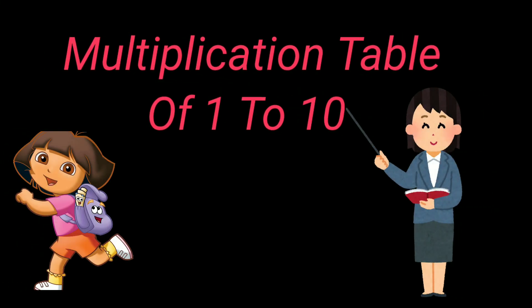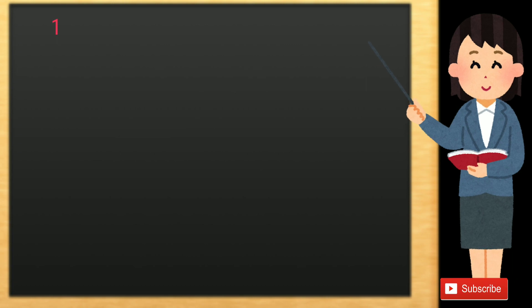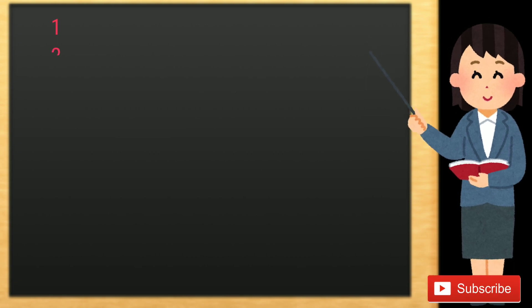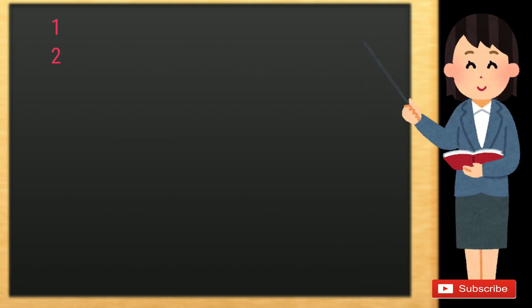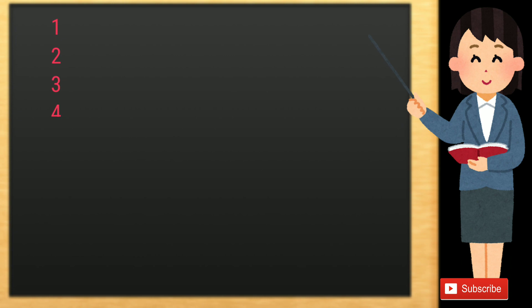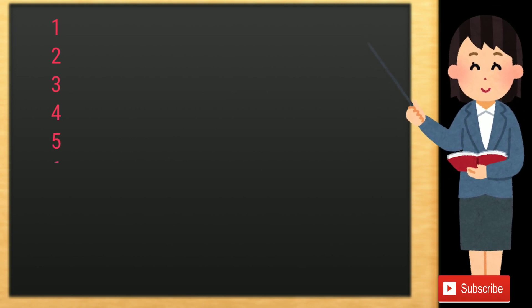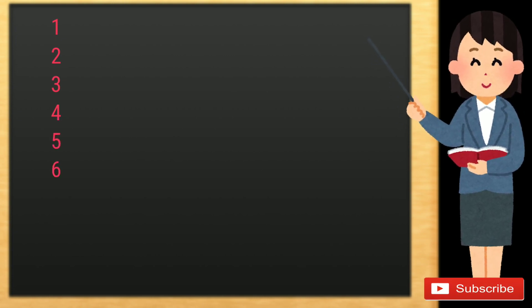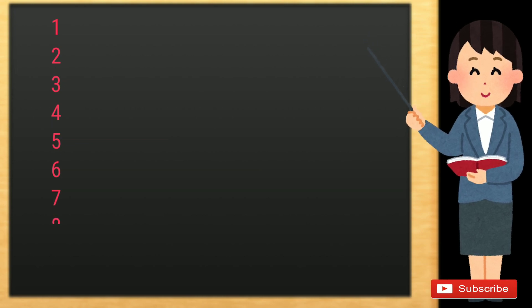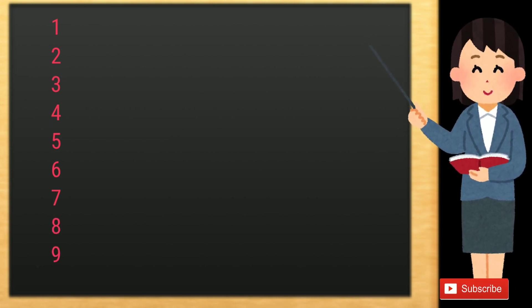Multiplication Table of 1 to 10. 1 1s are 1, 1 2s are 2, 1 3s are 3, 1 4s are 4, 1 5s are 5, 1 6s are 6, 1 7s are 7, 1 8s are 8, 1 9s are 9.